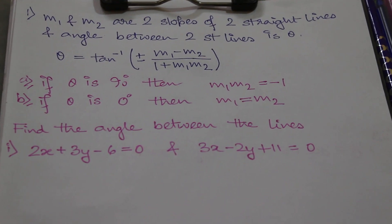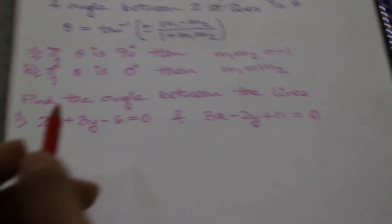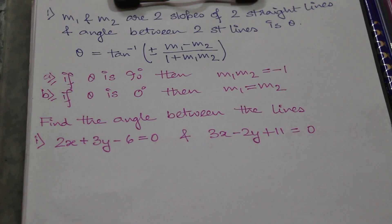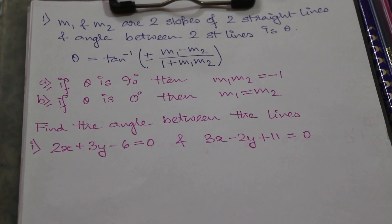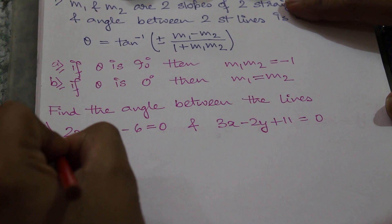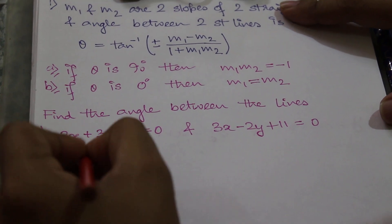Now let us illustrate with some examples. Find the angle between two lines: 2x + 3y - 6 = 0 and 3x - 2y + 11 = 0.